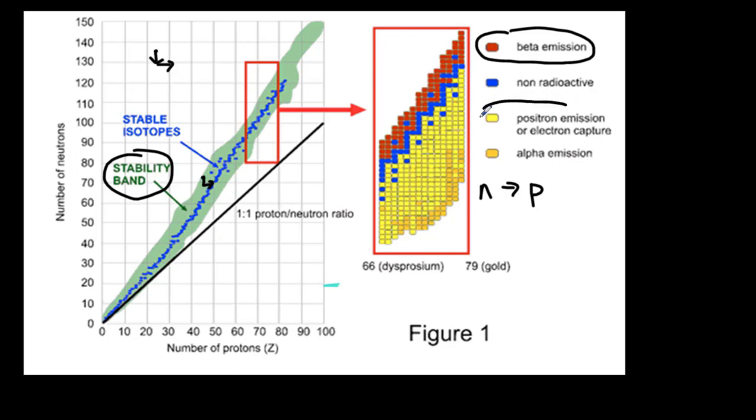The positron emission, the positive beta decay, that occurs underneath those stable isotopes. If you think about what's happening for positron emission, that's when a proton changes into a neutron inside the nucleus. So we're going to decrease the number of protons, and we're going to increase the number of neutrons.